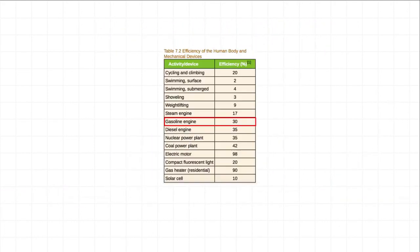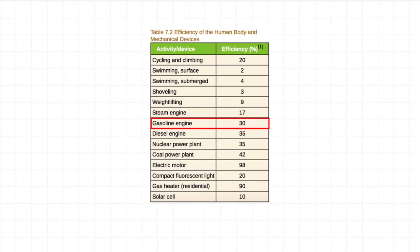This is seen as well in other systems such as a gas engine, which has an efficiency of 30% of converting chemical energy into useful mechanical energy out.